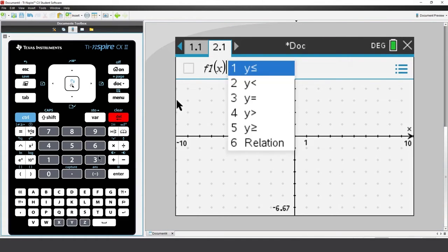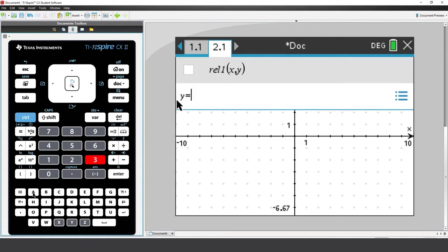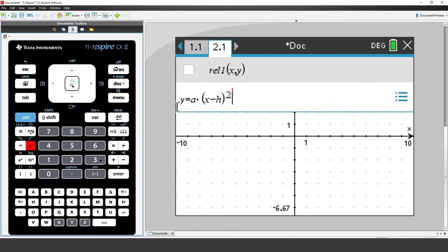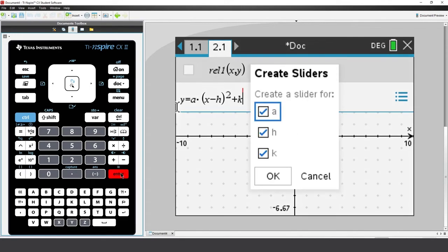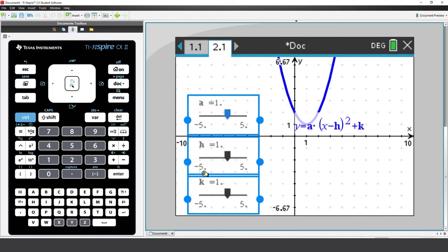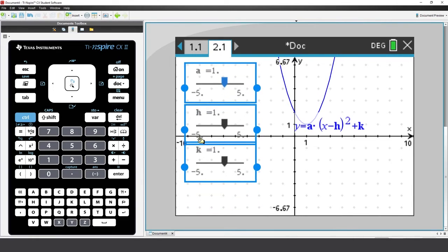Insert a Graphs application and graph y equals a times bracket x minus h all squared, plus k. This time we get three new sliders. Move them over a little and press escape.